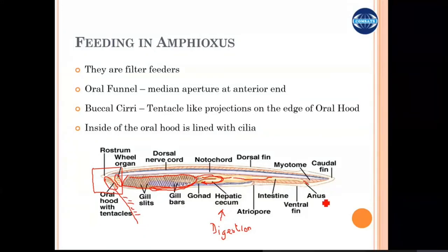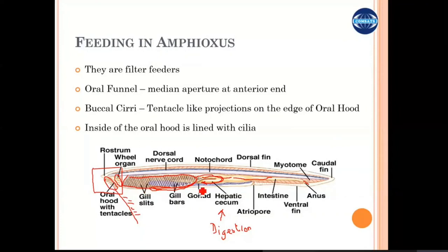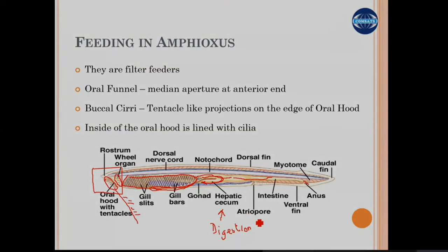The excess water, which continuously cycles through the animal body, passes through the gill slits and comes into a cavity known as the atrium, and is then released from the body through an opening called the atriopore.